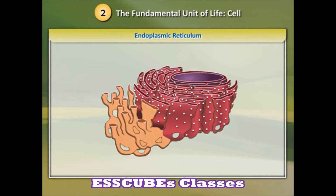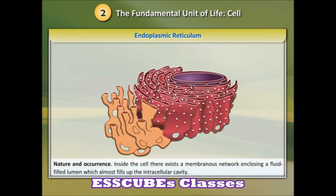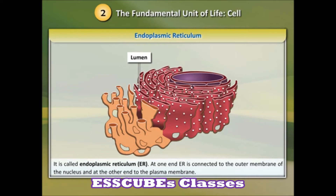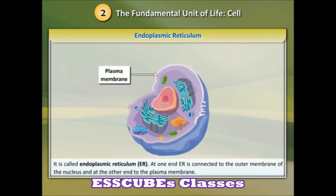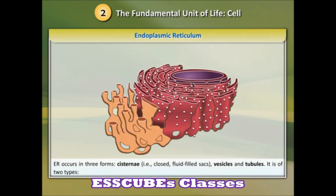Endoplasmic reticulum — ER — nature and occurrence. Inside the cell there exists a membranous network enclosing a fluid-filled lumen, which almost fills up the intercellular cavity. It is called endoplasmic reticulum, or ER. At one end, ER is connected to the outer membrane of the nucleus, and at the other end to the plasma membrane.